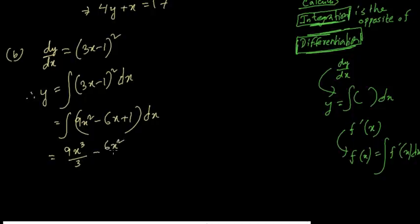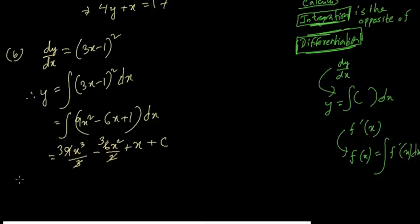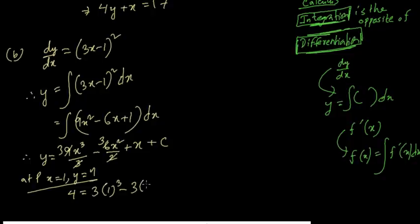Continuing the integration: 1 becomes x, and we add constant c. Simplifying: 9/3 = 3 and 6/2 = 3, giving y = 3x³ - 3x² + x + c. To find c, we need a point. Point P gives us x = 1 and y = 4.